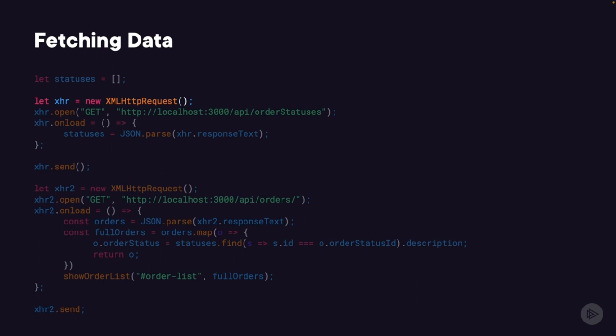It specifies the path of the request in the open function — in this case, localhost:3000/api/order-statuses. It then has an onload function that you can think of as a success function: when the HTTP call returns successfully, it will call the code inside this onload function. Finally, it has a send function. The API request is not actually made until the line xhr.send — there's a lot of setup before the request is actually sent.